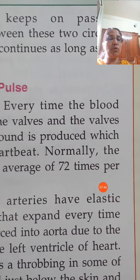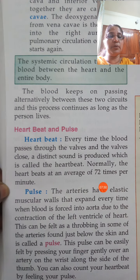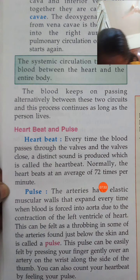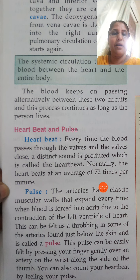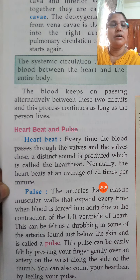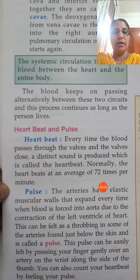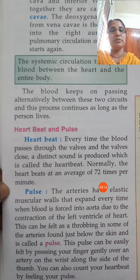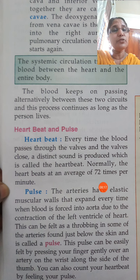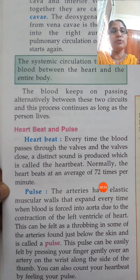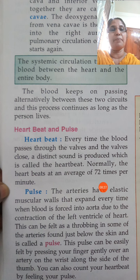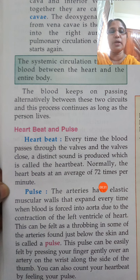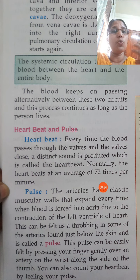Normally, the heartbeat of an average person is 72 times per minute. We can also hear the heartbeat if we carefully listen to the chest region of a person. The heartbeat sound is produced because of the closing of the valves of the heart. Usually two kinds of sounds are produced by the heart — that is 'lub' and 'dub'. We can hear the sound of the heartbeat because of the closing of the valves.